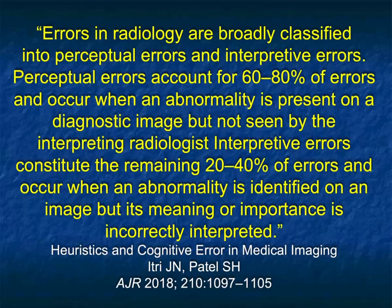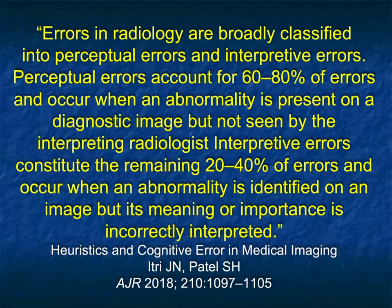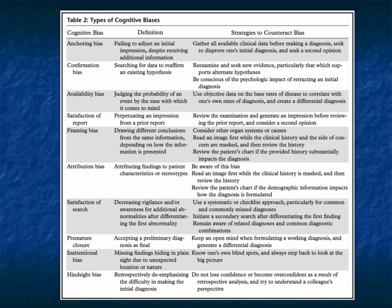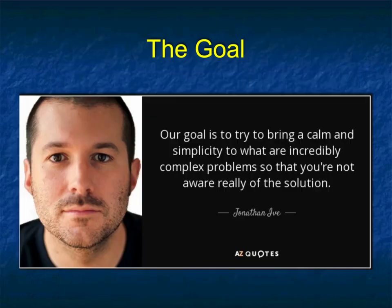There are perceptual errors and interpretive errors. Perceptual errors account for up to 80% of errors and occur when an abnormality is present on an exam but not seen. Interpretive errors you can train on and get better — what is that liver mass, that pancreatic mass? Is it a peanut, a PDAC, a multilocular cyst? The good news is that once you identify a tumor of the pancreas, someone else will look at it. But if you read the study as normal, you'll have more problems. We also talk about cognitive biases: anchoring bias, confirmation bias, availability bias, and on and on.